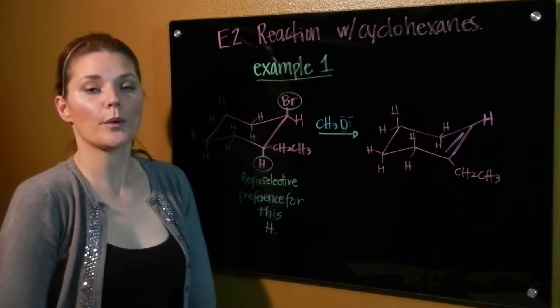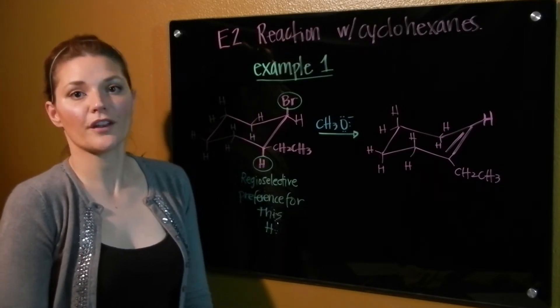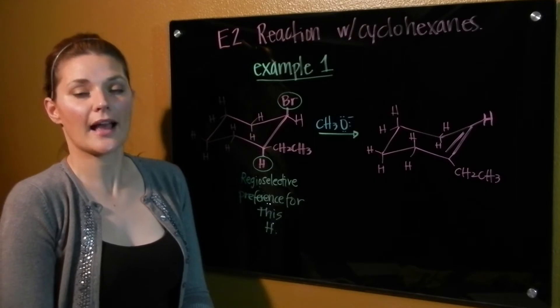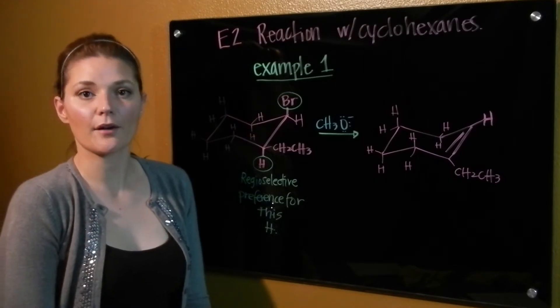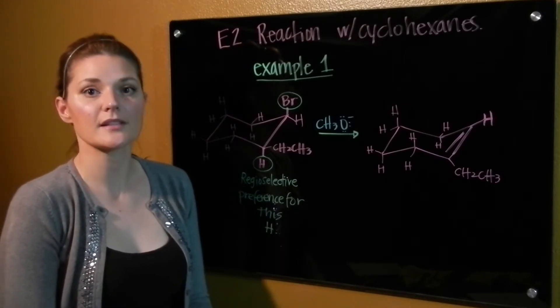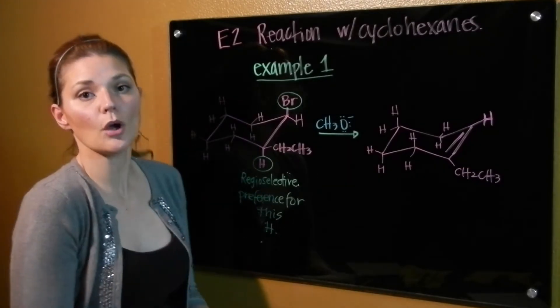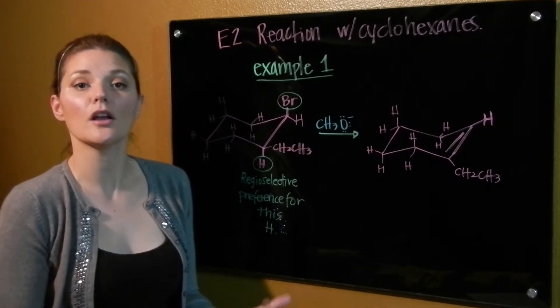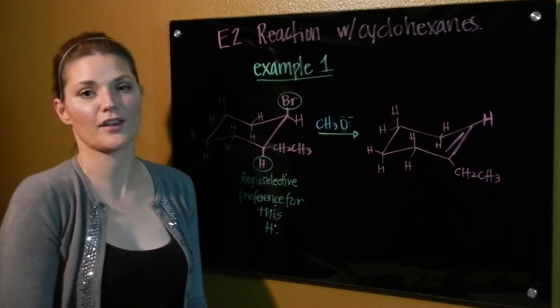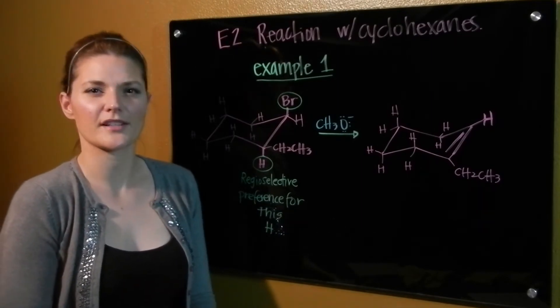So remember, in this case here, we were looking first that it was an E2 reaction. We were verifying that the halogen was located axially. And then we look at the beta carbons and see which of the beta carbons has an axially located H. If in this case they both do, we're looking at regioselectivity. Which one would form our more stable alkene at the very end? Let's take a look at another example.